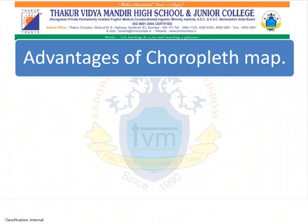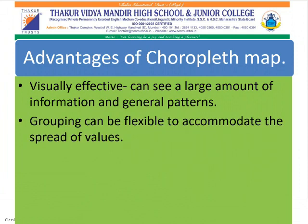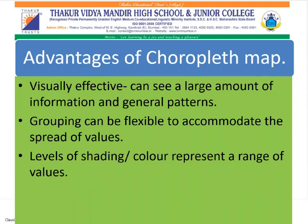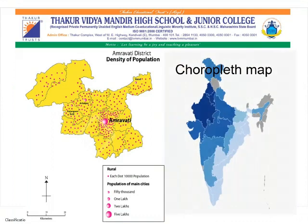What are the advantages of the choropleth map? First, it is visually effective — you can see a large amount of information and general patterns. Grouping can be flexible to accommodate the spread of values, and levels of shading and color represent a range of values. We have studied two different types of distribution maps: the dot map and the choropleth map. For the next lecture, we will continue with the isopleth method. Thank you.